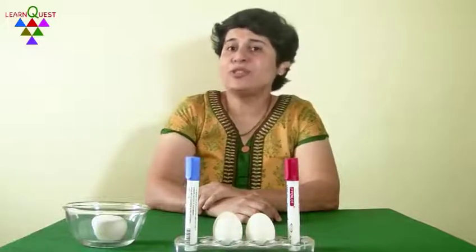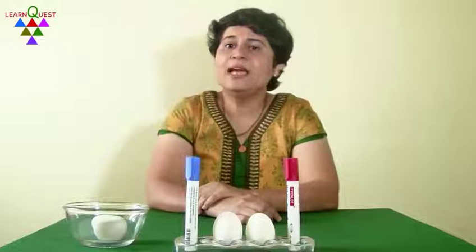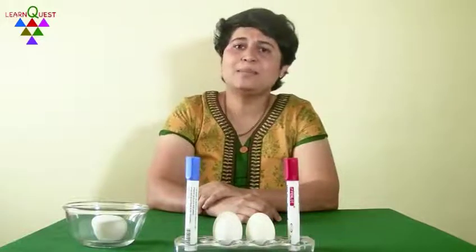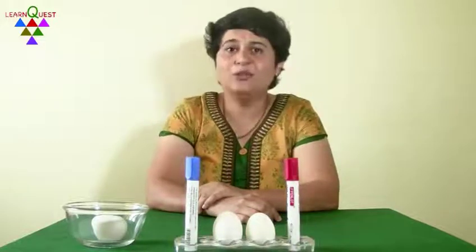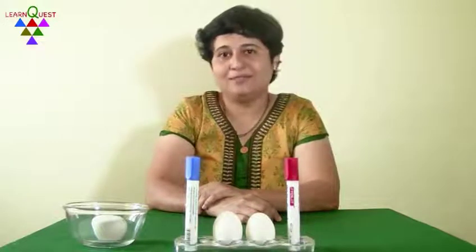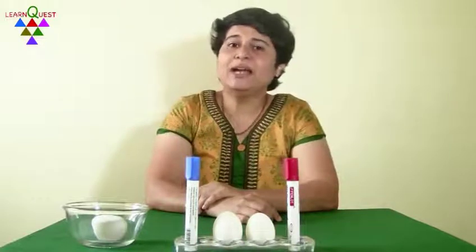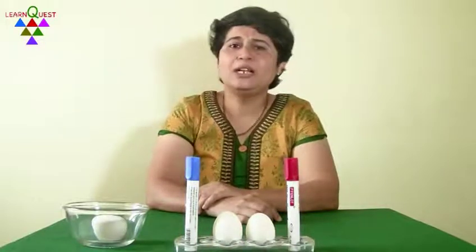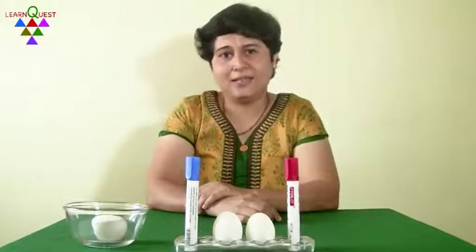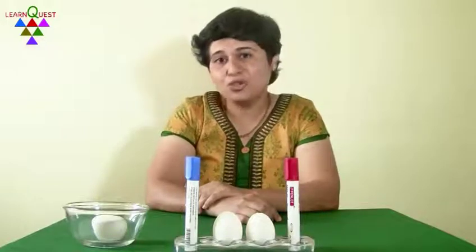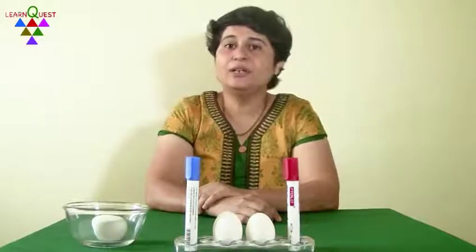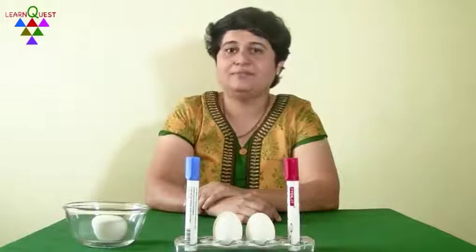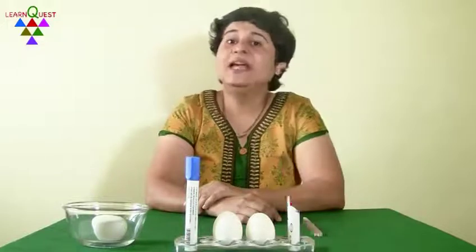Before you start teaching large numbers, it's important to revise the concept of place value with smaller numbers. So start by writing a number on the board, say 275, and ask students to show that number using the place value house. In case you are not familiar with the place value house, please look up the video for the place value house.